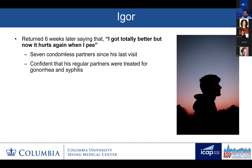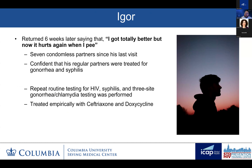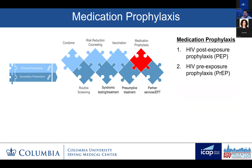He doesn't come back in two weeks. However, he returns six weeks later saying, "I got totally better, but now it hurts again when I pee." He's had seven condomless partners since that last visit, and he's confident that his regular partners were treated for gonorrhea. He's back in clinic with recurrent dysuria and a small amount of discharge. We again do our routine testing and again treat him empirically with ceftriaxone and doxycycline per the guidelines. But this time he's really honest. He says, "This is frustrating. Is there anything I can do to stop getting STIs?"